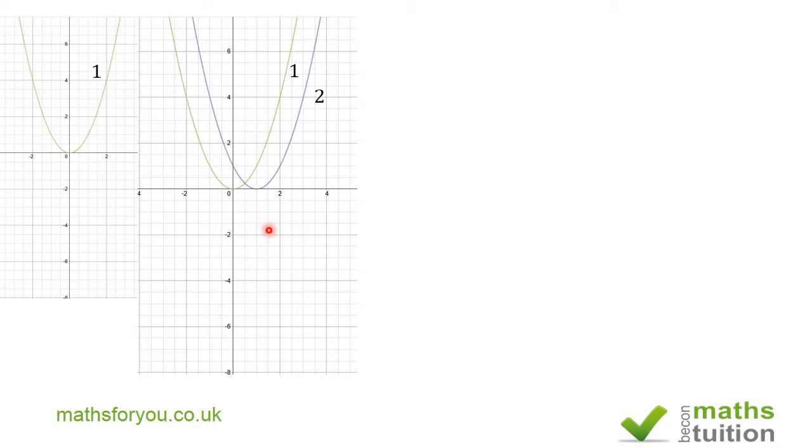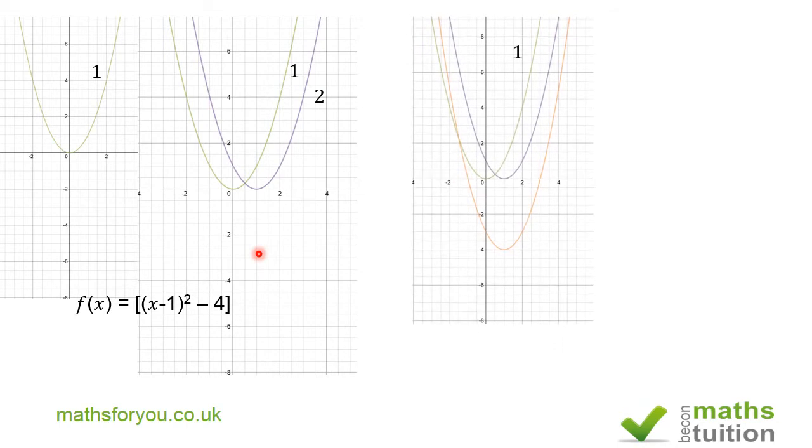And now for graph three. Looking at this function here, we're going to translate graph two four units downwards. So graph three is right this one here, and we've got graph one, graph two, and then graph three there.